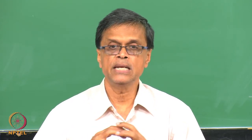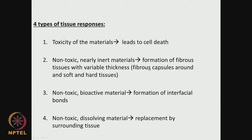What happens with inert materials? There is formation of fibrous tissues with variable thickness — the entire material gets encapsulated by fibrous tissues. These are called fibrous capsules, which could involve soft and hard tissues. That was the thinking in second-generation biomaterials — the biomaterial should be completely inert.